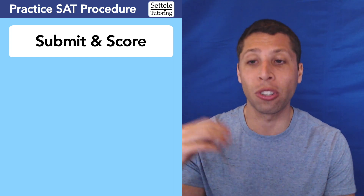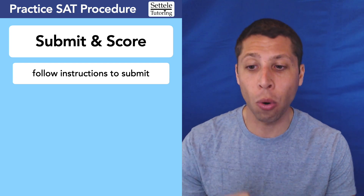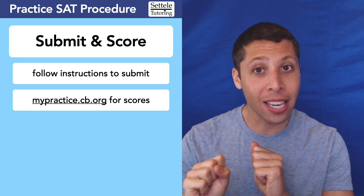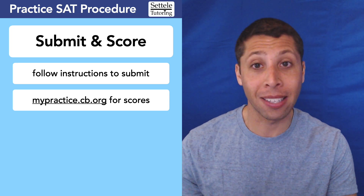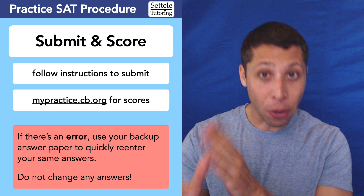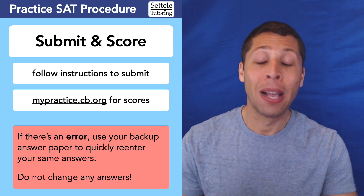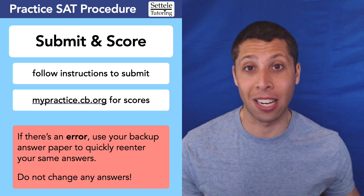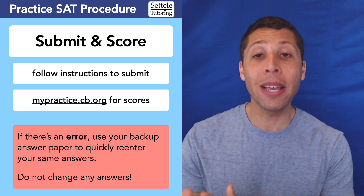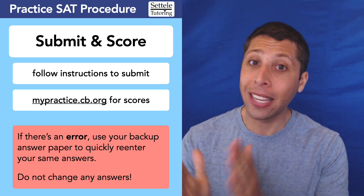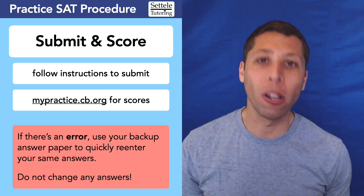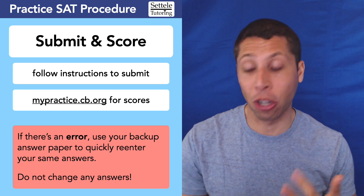Submit and score the test — this is all going to happen in the app for you. Follow whatever instructions they give you at the end to submit your scores. You will need to get out of the app to go see those scores at mypractice.cb.org. You might need to give it a couple of minutes to actually score everything and display. But if there is a problem, this is why I want you to have that backup answer form — you can just go back into the app, restart the test, and quickly enter all the answers that you had previously. Don't change any of them, don't redo any questions, just resubmit it. This does happen occasionally and it would really suck if you took a two-to-three hour test and then all of your work is gone.